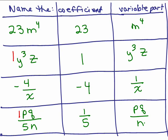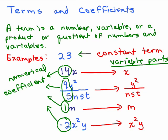So what this means is all of these problems can be thought of as 23 times m⁴, 1 times y³z, negative 4 times 1 over x, and 1/5 times pq over n. And if you just use your rules for fractions, you would get what I had over here originally. And of course, you don't have to write the ones that I have in red, because that's just showing you the coefficients.